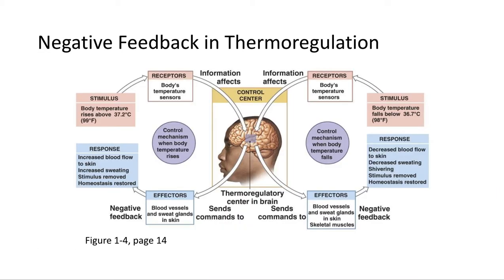Let's take one more look at negative feedback through thermal regulation. When body temperature rises, receptors pick up the information, take it to the control center in the brain, and the brain signals the effectors — blood vessels and sweat glands. Blood vessels dilate, you start to sweat, and you return to homeostasis. Conversely, when body temperature drops, receptors signal the brain, blood vessels constrict, you start shivering, and body temperature rises back to homeostasis.